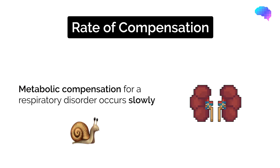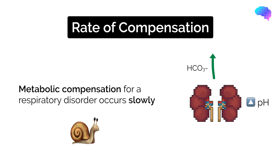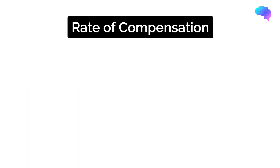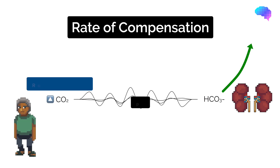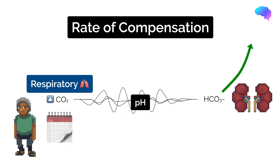Metabolic compensation for a respiratory disorder, however, takes at least a few days to occur, as it requires the kidneys to either reduce HCO3 production to decrease pH, or increase HCO3 production to increase pH. As a result, if you see evidence of metabolic compensation for a respiratory disorder — for example, increased HCO3 or base excess in a patient with COPD and CO2 retention — you can assume that the respiratory derangement has been ongoing for at least a few days, if not more.